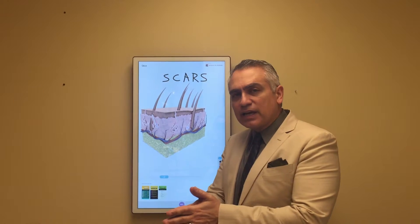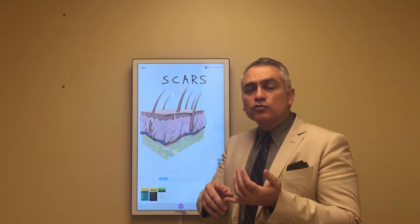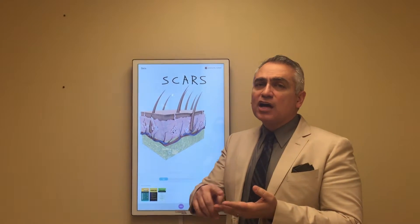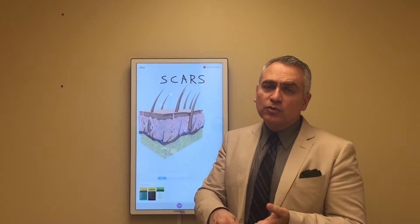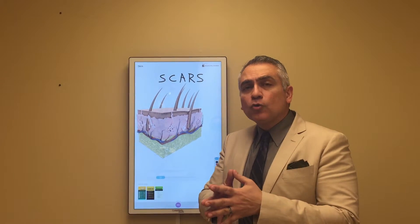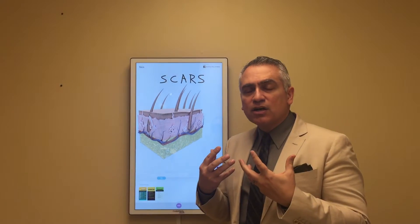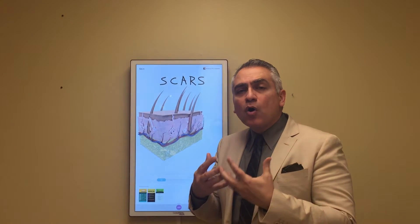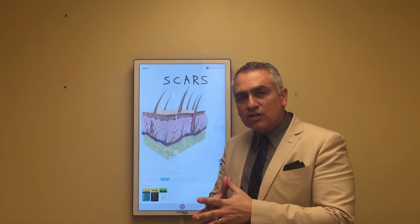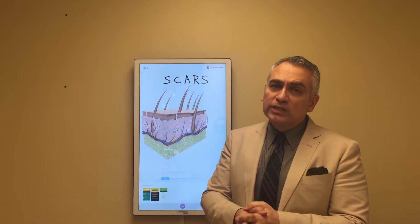So what type of scars do we see? The first thing that we look at is the color of the scar — do we have red scars, white scars, skin-colored scars, or hyperpigmented dark brown scars? We also look at the quality of the scar: we have boxcar scars, ice pick scars, and rolling scars.